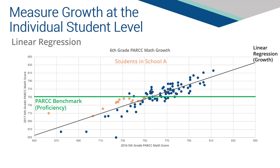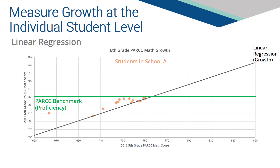Let's look at a sample school, School A. Since the dots on the scatter plot represent individual students — and collectively all students across the state — a subset of dots could come from a particular school. For example, the orange dots could come from all students of School A. Focusing only on the students from School A shows that while all students are below the proficiency benchmark, all students are above the linear regression growth model.